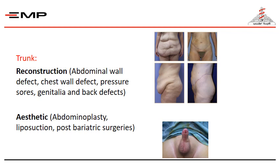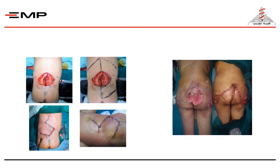This is an example of hypospadias in a male child. Also back defects — this is an example of a meningomyelocele defect after excision by the neurosurgeon, where we performed a local transposition flap. Also this is a case of a bedridden patient with a huge sacral pressure sore, who underwent excision and reconstruction by advancement flaps.